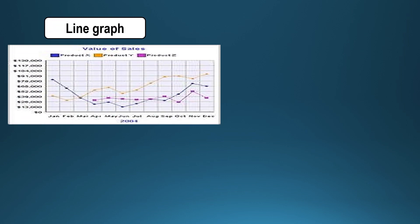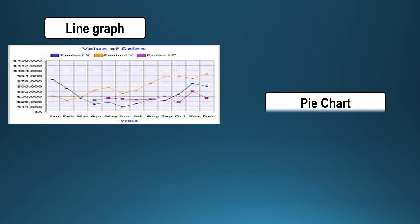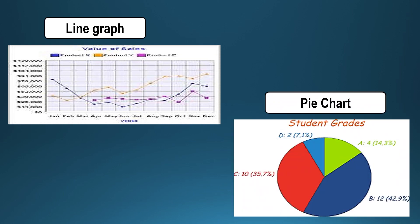If you are interested in the change which takes place in one variable over a period of time, or how different samples have shown change over a period of time, you can draw a line diagram which provides a comparative picture — for example, among the sales of three different products over a period of time. As a teacher, if you are interested in finding out how many students in the class have attained different grades — maybe A, B, C, D, E grade — you can have a pie chart which provides a synoptic view of the distribution of students among the various grades.